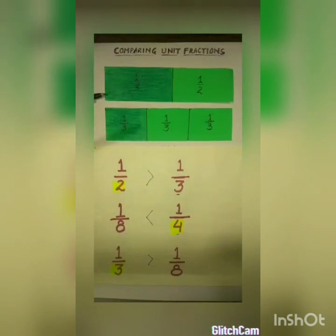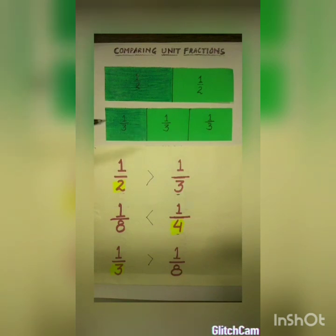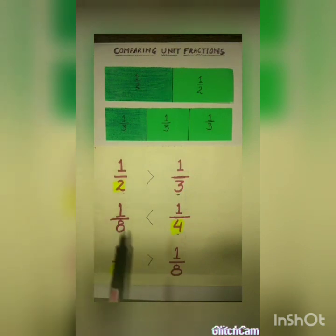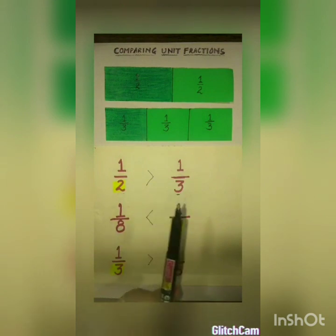Now we will compare unit fractions, one by one. First, we will take one by two and one by three. If we see what we have noticed — yes, one by two is bigger than one by three. So children, one by two is greater than one by three.